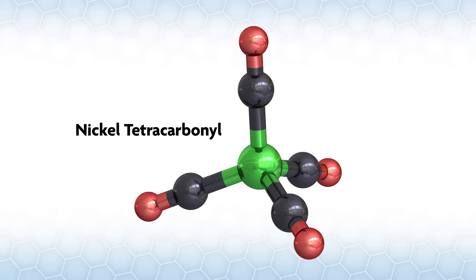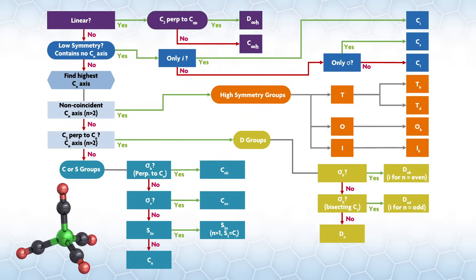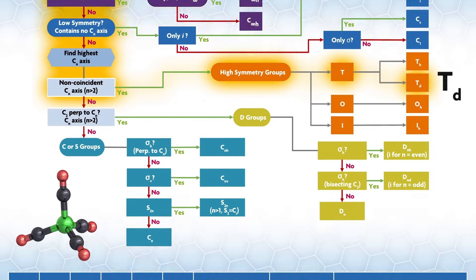Let's quickly look at a couple of transition metal examples and assign the valence orbitals to irreducible reps. Here is nickel tetracarbonyl. If you go through our point group assignment flowchart, the compound is not linear. It's not in a low symmetry group. It has a C3 axis. In fact, it has multiple C3 axes that are not coincident. So we're in a high symmetry T group. The mirror planes contain the C3, so it is in the Td group. The Td character table looks like this.